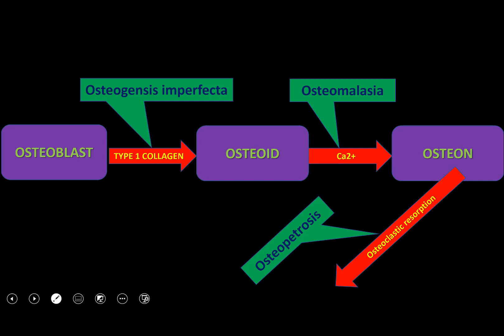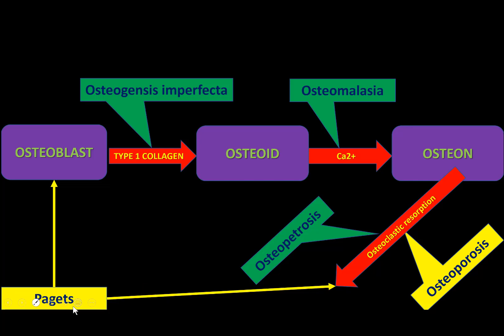Osteopetrosis results from decreased osteoclastic activity, producing a thick but brittle bone with no resorption. Osteoporosis is the exact opposite — there is increased osteoclastic activity and increased resorption, causing the bone to become less dense and osteopenic. Paget's disease occurs because of both increased osteoblastic and osteoclastic activity, producing a marble-like bone.